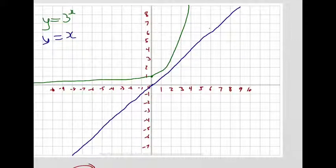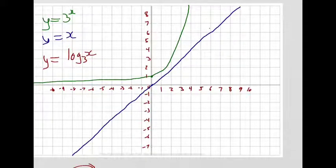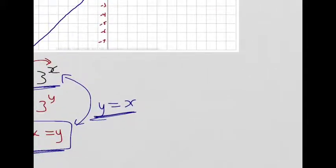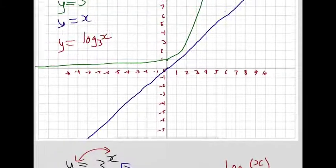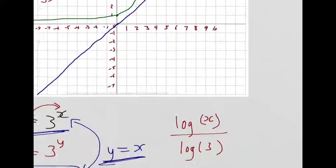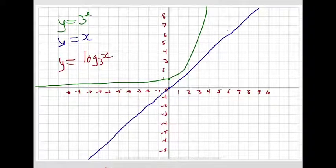And now, y equals log x base 3. If you're not getting log x base 3 in your calculator, remember: when you want a base of 3, you've got to use log of x over log of 3. That gives the logarithm a base of 3, since naturally the calculator uses base 10. That curve crosses at the point (1, 0) — remember, it used to be (0, 1), but now the x and y have swapped.